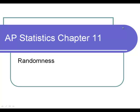Chapter 11 is the beginning of Unit 3. Unit 3 covers Chapters 11, 12, and 13. Chapter 11 is about randomness and random events.